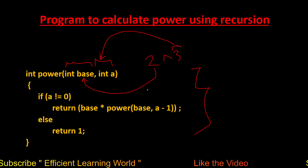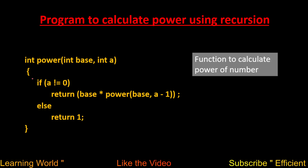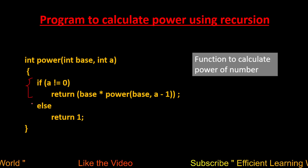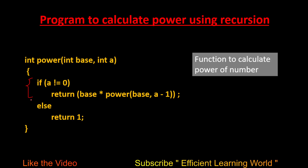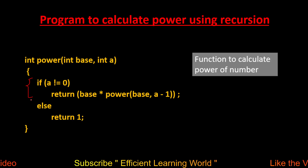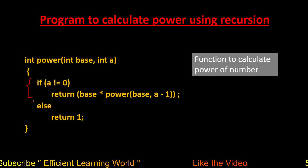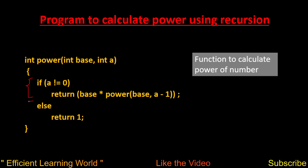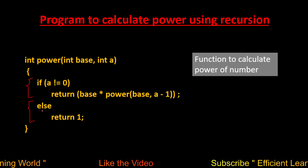The function has two parts: a base condition to prevent infinite recursion — the termination condition — and an else part that executes when the base condition is false. Let's dry run the code from scratch.